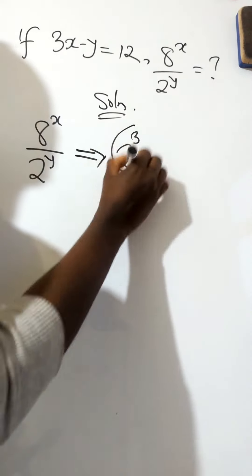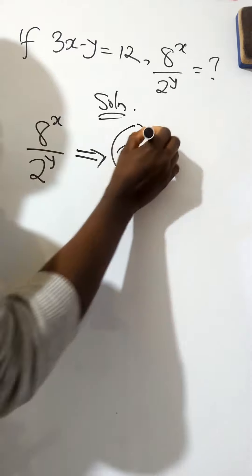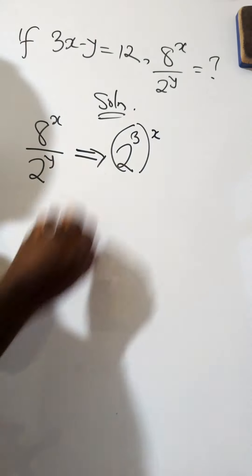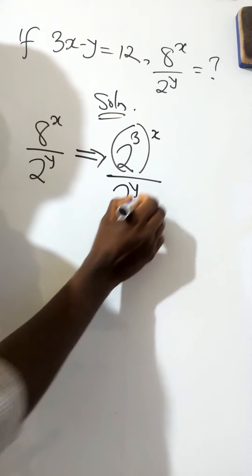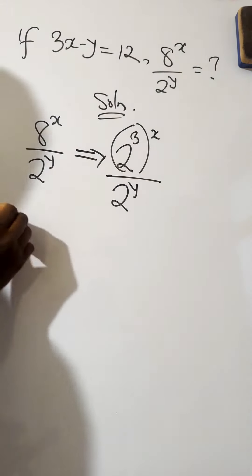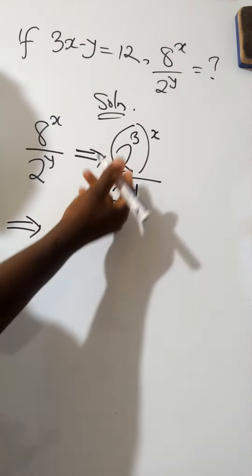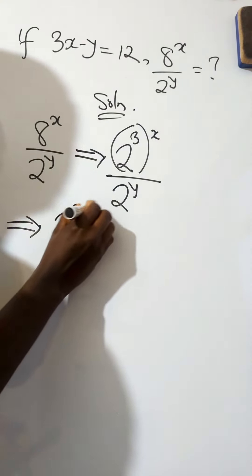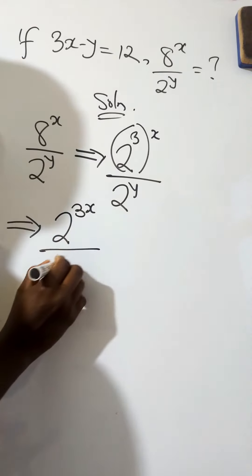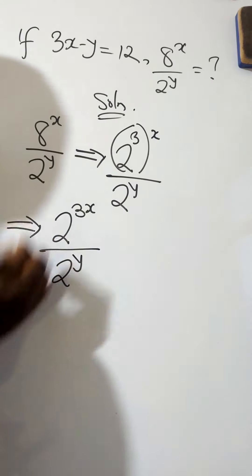And then, it's multiplying, it's raised to power x as well. All over, 2 raised to power y. Going further, we open these brackets, we'll multiply these two powers. So, we'll have 2 raised to power 3x all over 2 raised to power y.